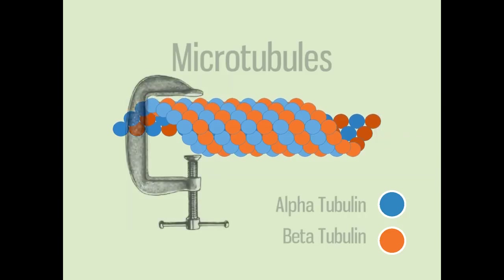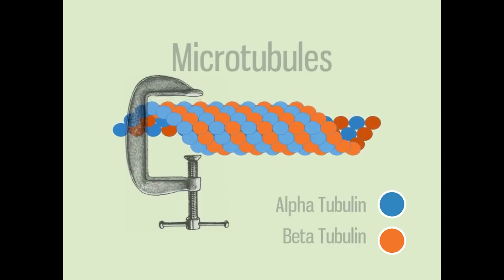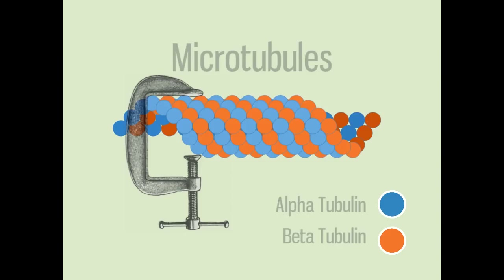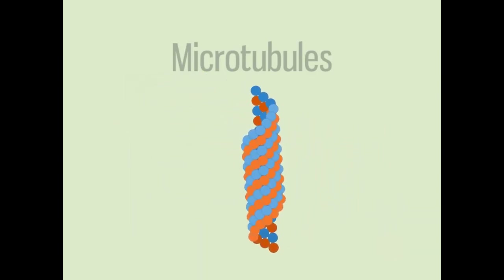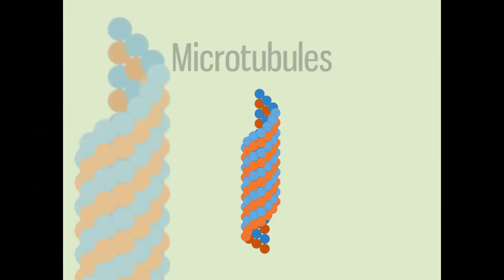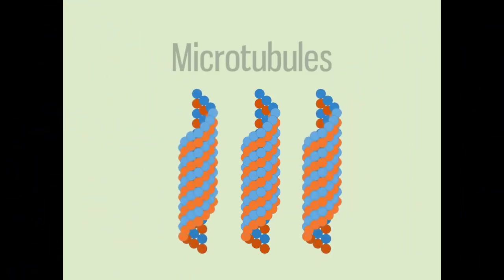The shape of the tube gives it strength. It can resist a lot of compression force and still maintain its hollow shape. This strength allows microtubules to maintain the overall shape of the cell. Like steel beams in a tall building, microtubules are like girders that protect a cell from collapse.